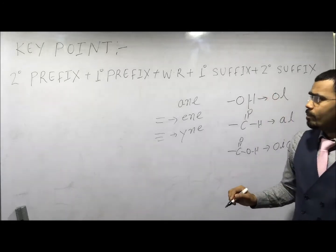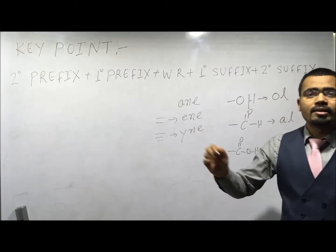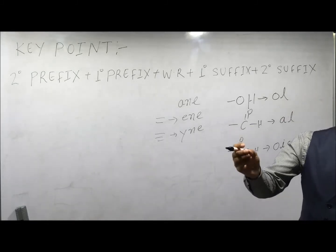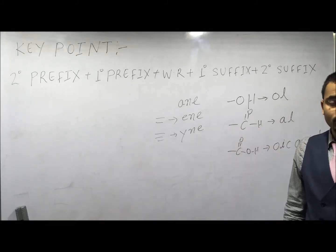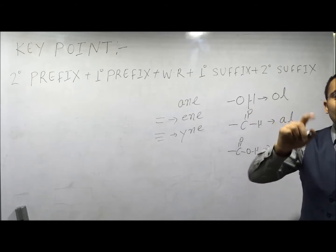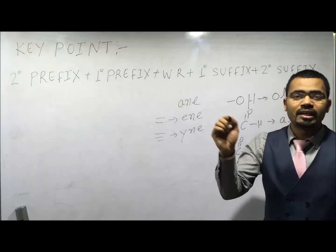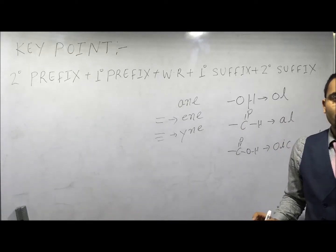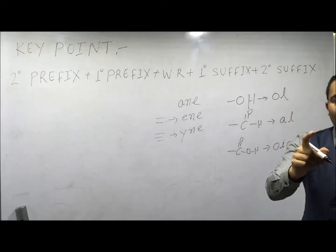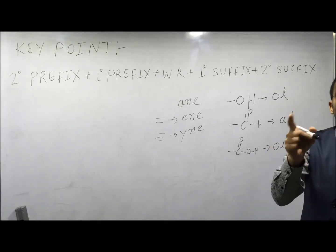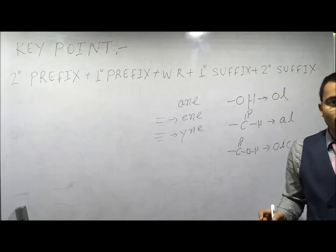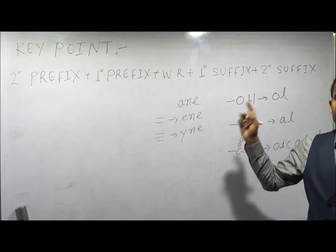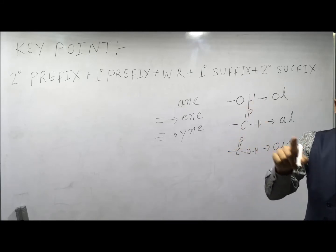So the question is: what is the principal chain and how do we decide it? That chain will be the principal chain which contains the maximum number of principal functional groups and unsaturation — that is double bonds or triple bonds — irrespective of the number of carbon atoms in the parent chain.